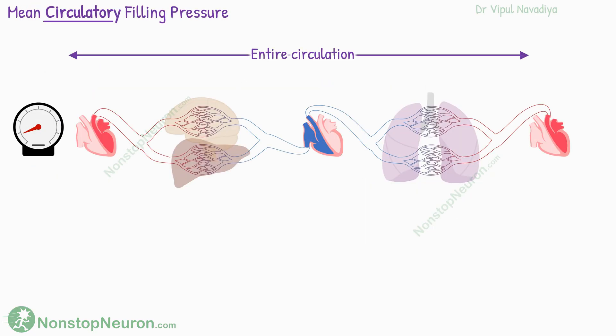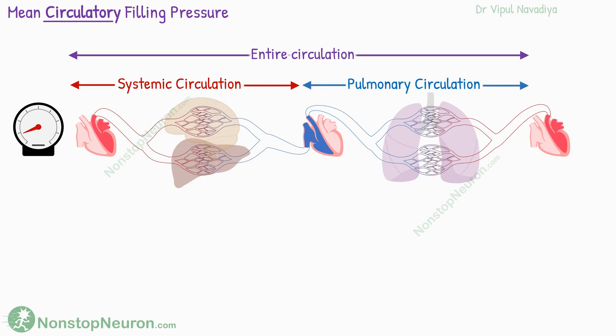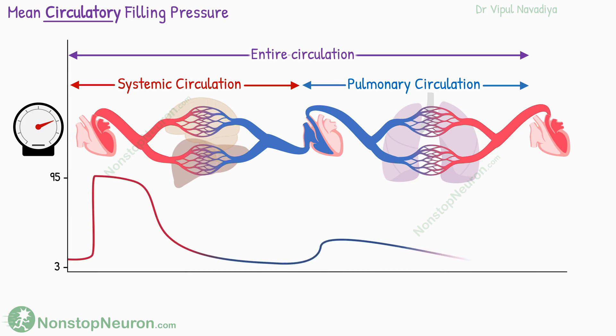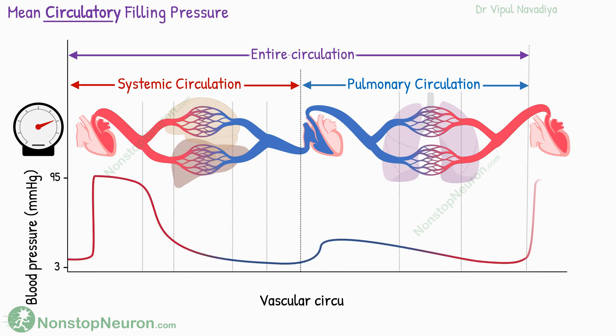In this diagram, the initial portion is systemic circulation and the later portion is the pulmonary circulation. As the heart contracts, it generates pressure, and the blood flows down this pressure gradient. This graph shows the pressure along different segments of the vasculature — this is the pressure profile when the heart is functioning.